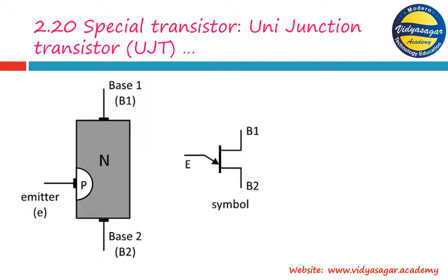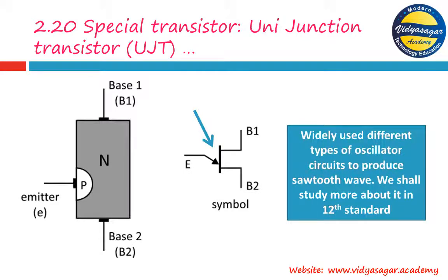The last topic of this chapter is the unijunction transistor or UJT, which has a brief mention in the 12th standard chapter on instruments in paper 1. The symbol is important — note that the arrow for the emitter terminal is drawn such that the upper distance is larger than the lower distance. It has two bases, B1 and B2, and emitter as the third terminal — there is no collector. UJT is widely used in oscillator circuits to produce sawtooth waves, which we shall study in 12th standard.